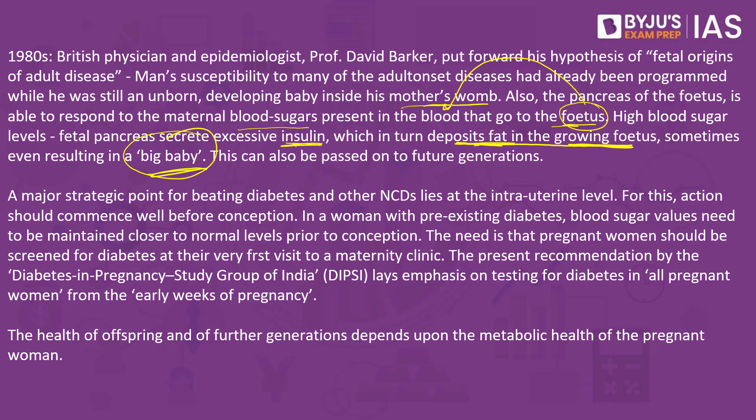This pattern can pass from generation to generation, especially when the diabetic person is female. The solution proposed by the authors is to keep a very close eye on the blood sugar levels of pregnant women. As soon as pregnancy starts, the woman's blood sugar levels should be monitored regularly, and doctors should try to maintain them as close to normal as possible from the very early weeks. This is the only way to break the chain of high blood sugar passing from one generation to the next.